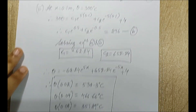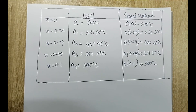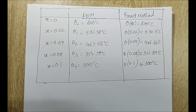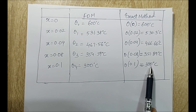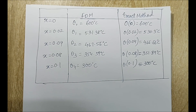Comparing both methods in a table: the FDM values are 531.38, 467.56, and 354.59 degree Celsius, while the exact solution values are 530.3, 466.66, and 351.89 degree Celsius. The values are very close, but the exact solution gives the precise and accurate answers. With this I end the session. If you have any doubts, please write in the comment section. See you in the next session, thank you.